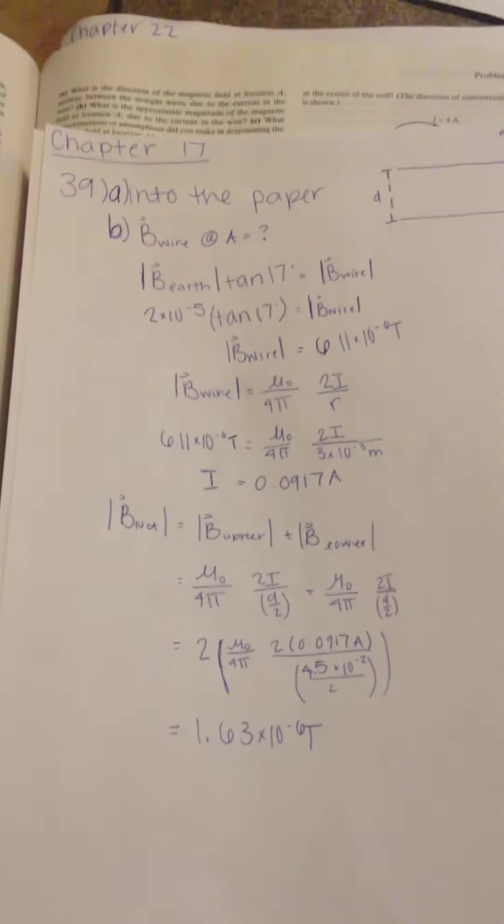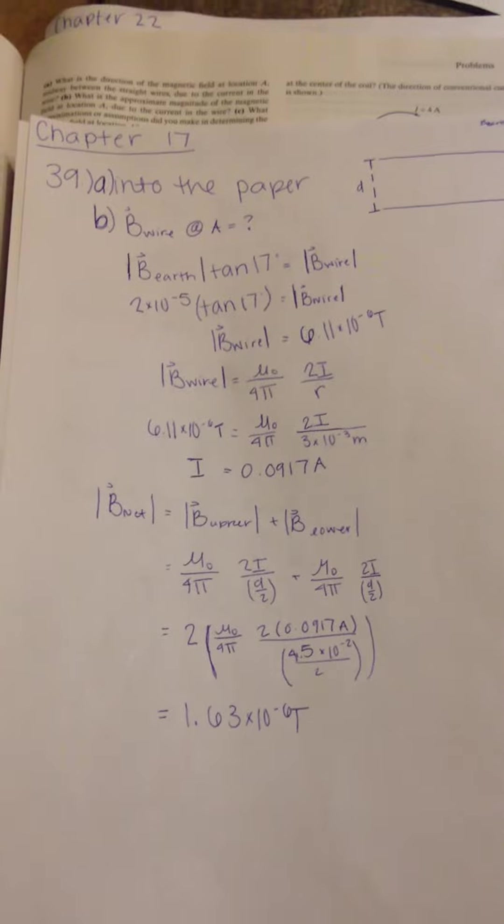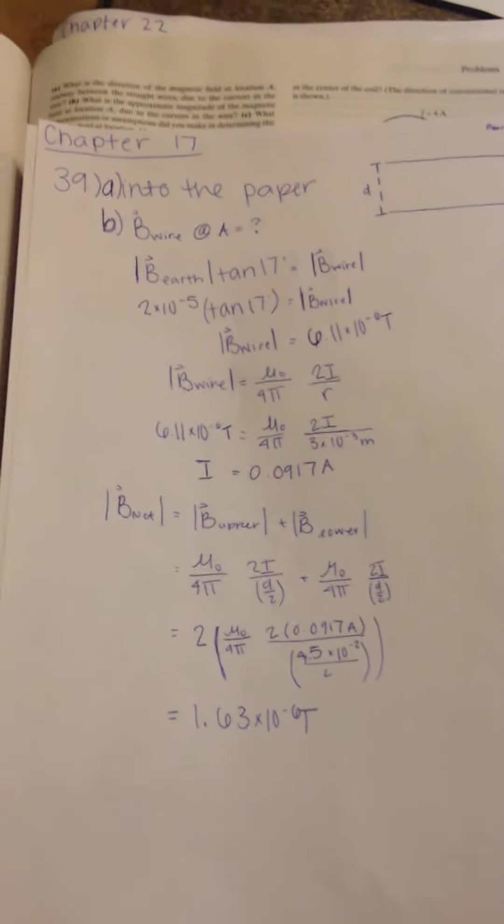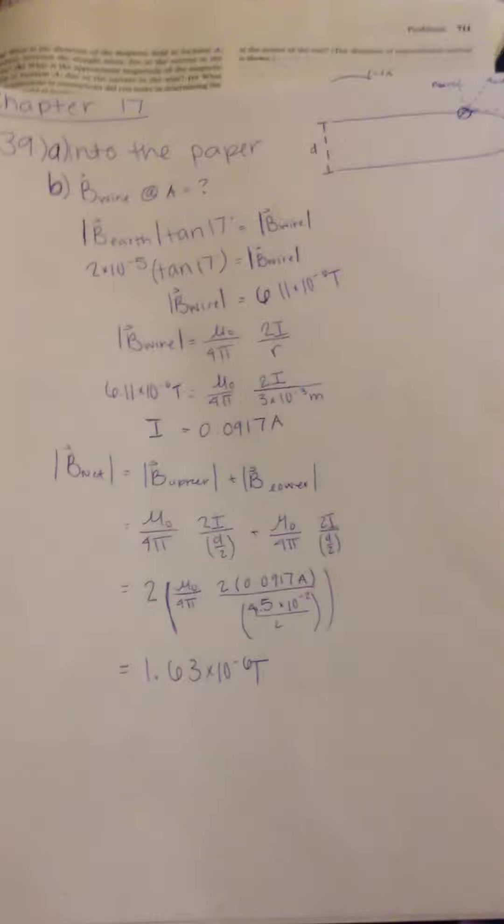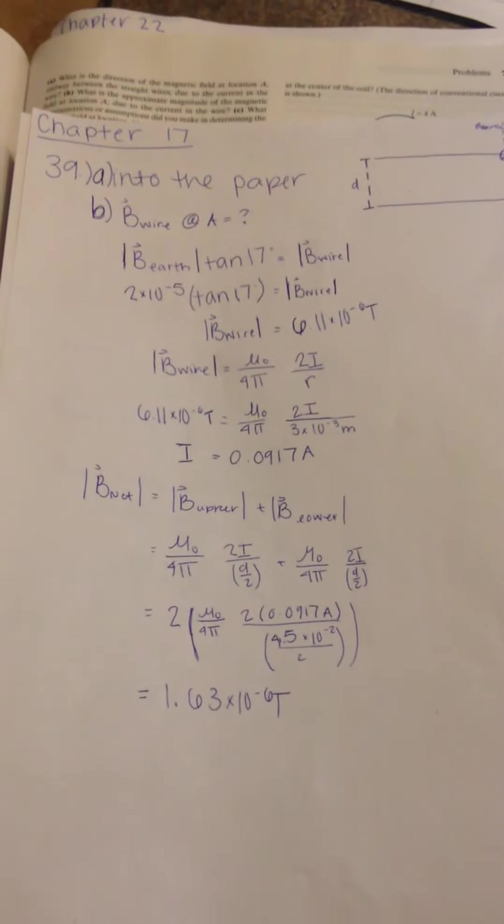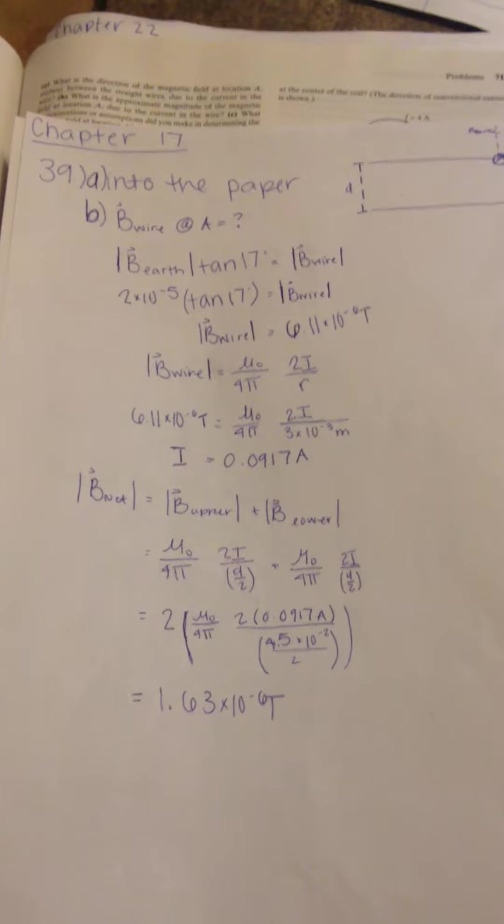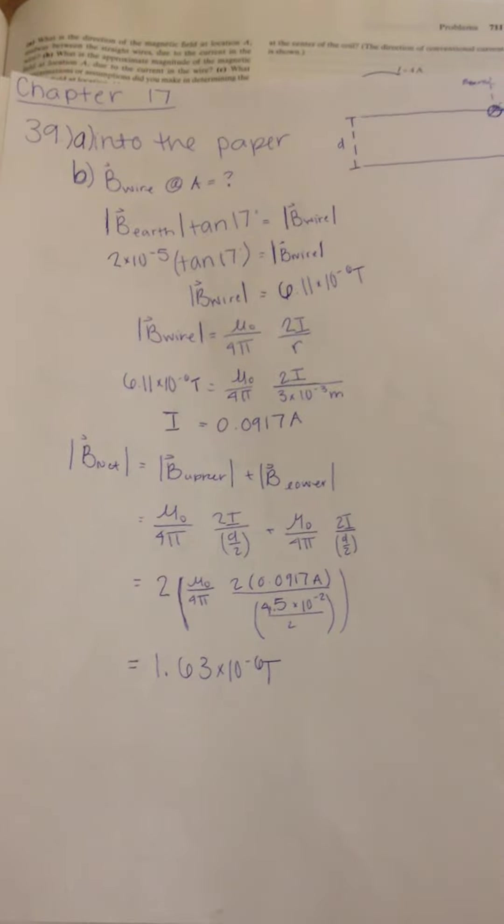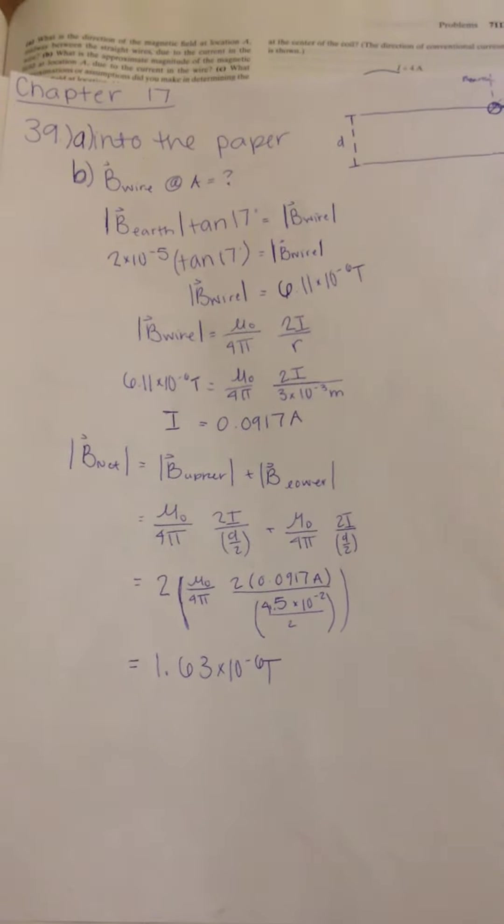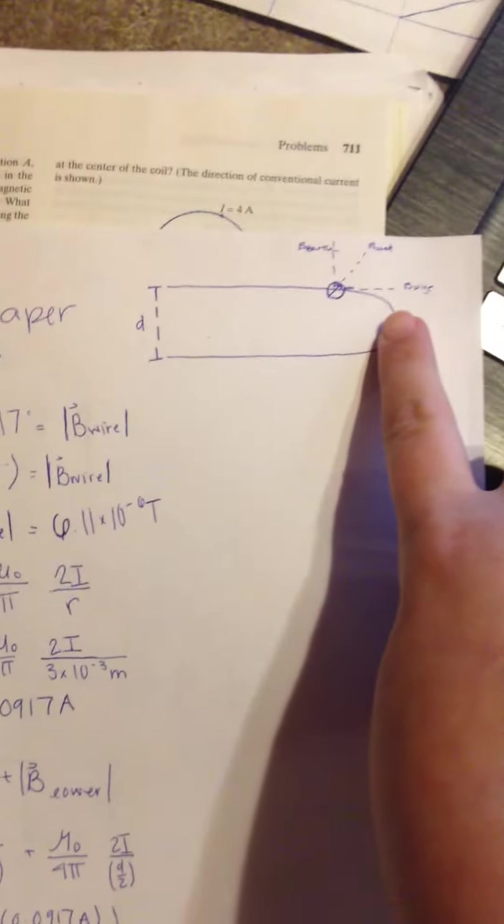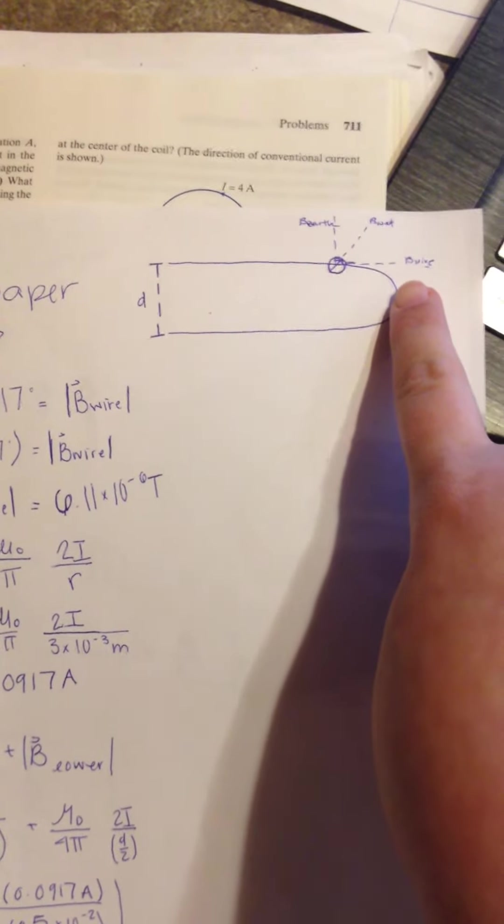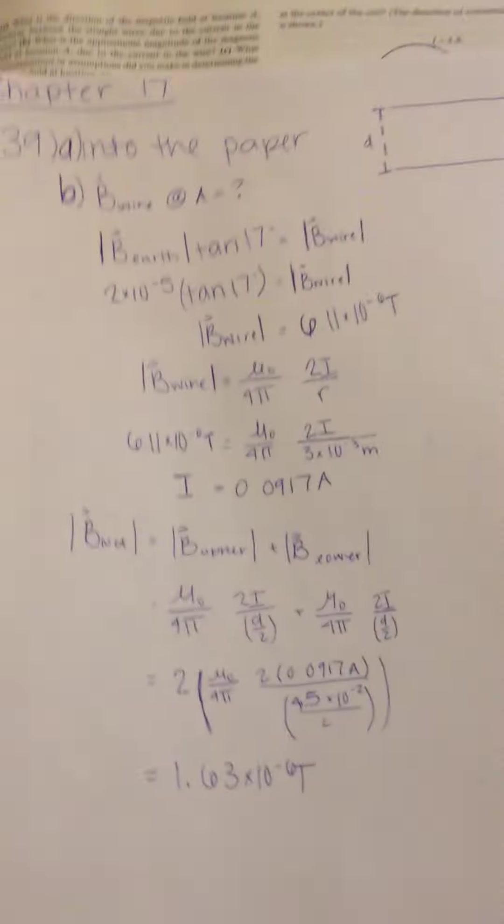Okay, so next, we are asked to find the total magnetic field, the net charge of that. So in order to do that, we first need to find the magnetic field of the wire at A. To do that, we know that we could form a little triangle over here, because we have this, and we know that the degree between it is 17 degrees.